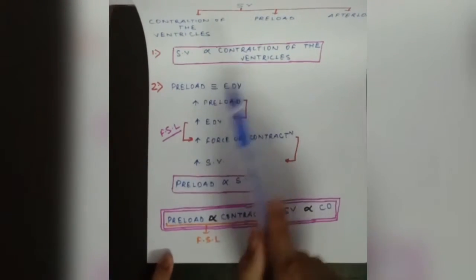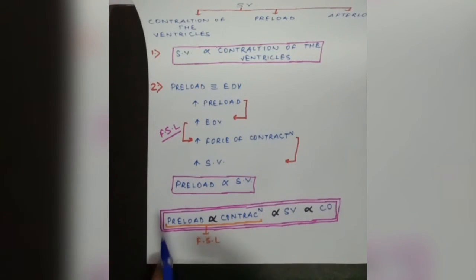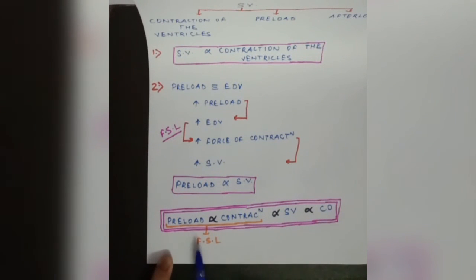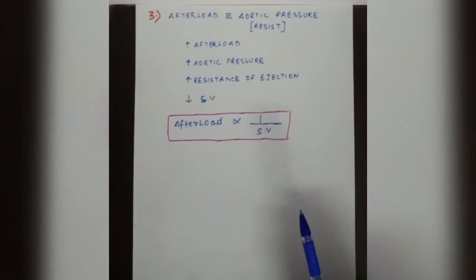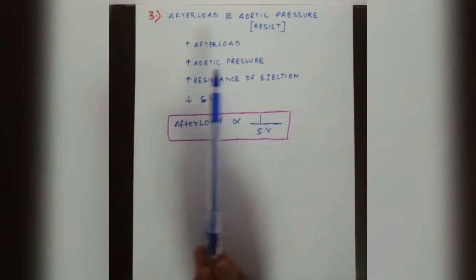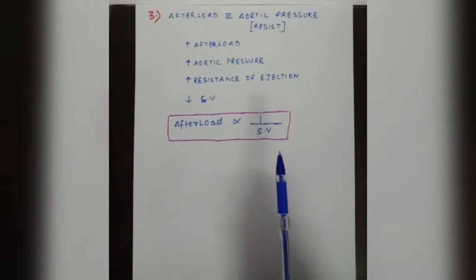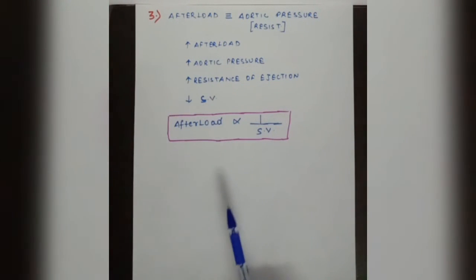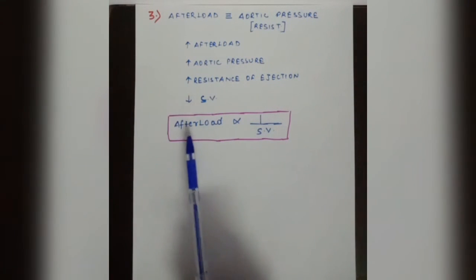Preload is directly proportional to contractility through Frank-Starling law, and directly proportional to stroke volume, which is directly proportional to cardiac output. The third factor is afterload. Afterload is aortic pressure — the resistance applied against which the ventricles must contract. The more the afterload, the more the aortic pressure, the more the resistance for ejection, and therefore the less the stroke volume. So afterload is inversely proportional to stroke volume.